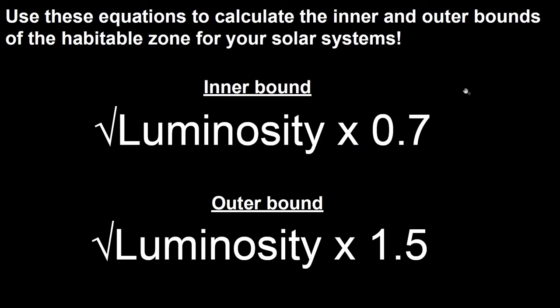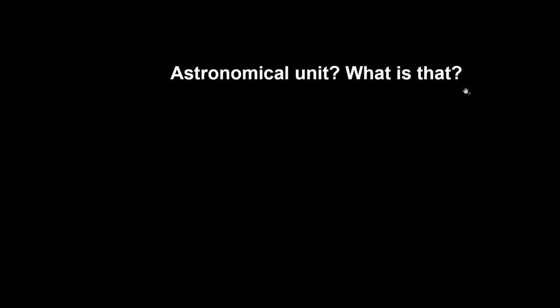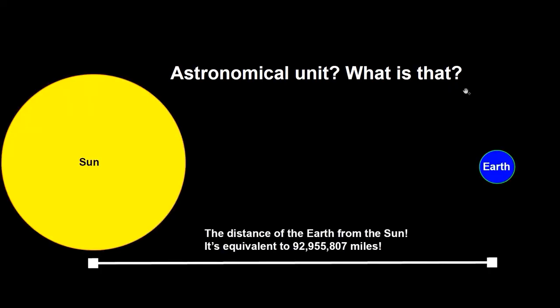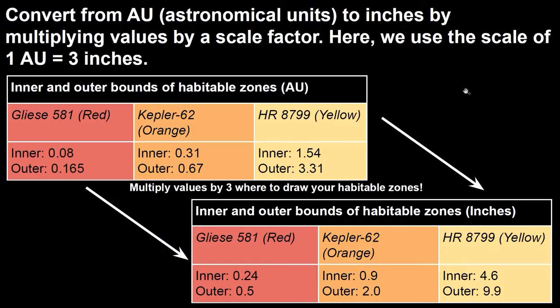We'll use these two equations shown here to calculate the inner and outer bounds of your habitable zones. You'll get your values in astronomical units. An astronomical unit is the distance of the Earth from the sun, equal to 92,955,807 miles. Since distances in our solar system are so large, scientists use astronomical units to make measuring things a little bit easier. To convert your numbers into inches to draw them on your paper, multiply the AU values by 3 — that will be how many inches from your star to draw your inner and outer habitable zones.